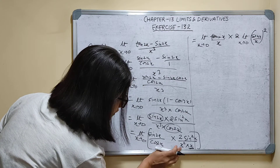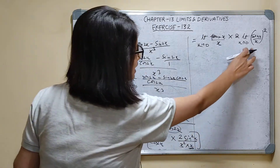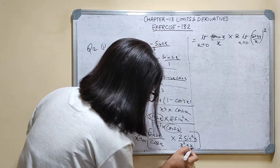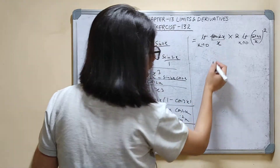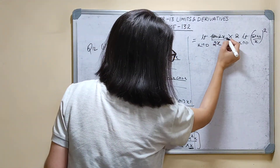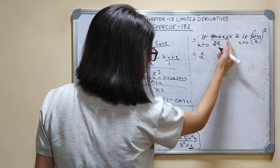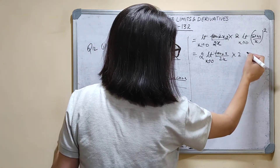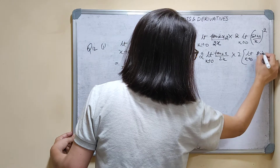So I write 2 outside, then limit x tends to 0 of tan 2x upon 2x, into 2, into limit x tends to 0 of (sin x upon x) whole squared. When x tends to 0, then 2x also tends to 0. So limit x tends to 0 of tan 2x upon 2x equals 1. And limit x tends to 0 of sin x upon x is also 1, so its square is 1.